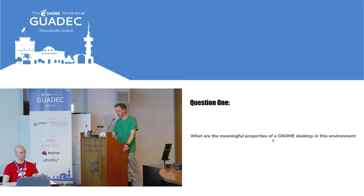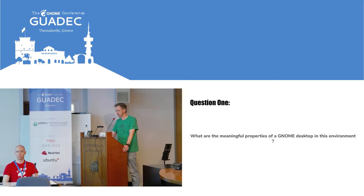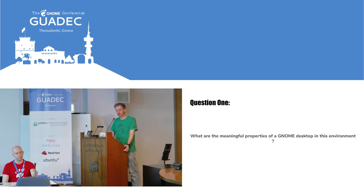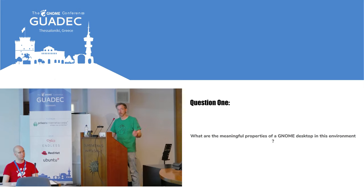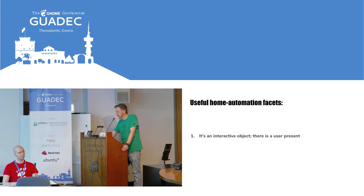Question one: if we want a desktop Linux system to be part of our home automation, what does it contribute? What states of the machine are important? What actions? What triggers? Not everything that's possible in Home Assistant makes sense. Just because there's a screen on your laptop doesn't mean you should treat it like a media player. When I thought about this, I ended up with three things relevant to a GNOME desktop when integrating it into home automation.